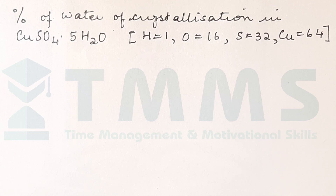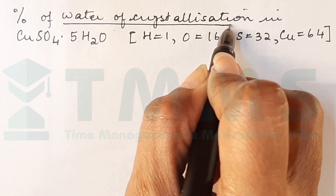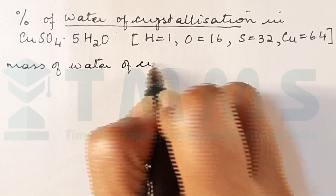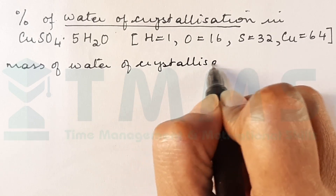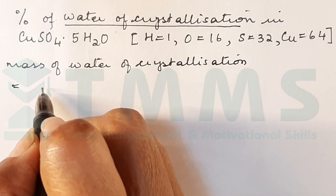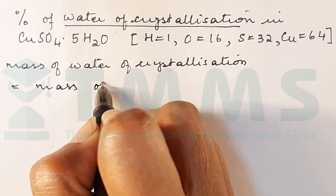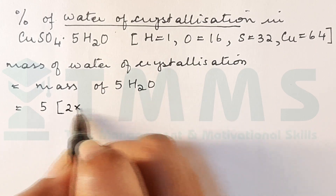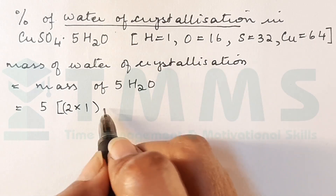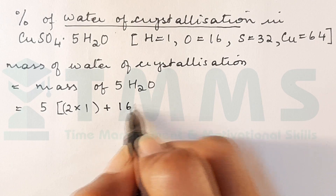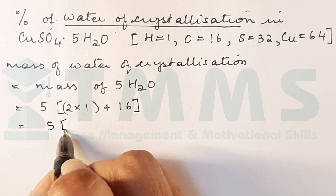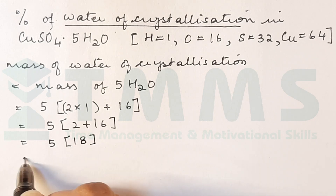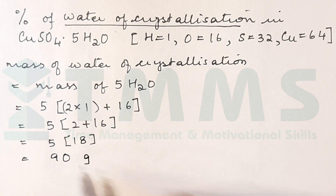Tip 2: find the mass of water of crystallization, which is the mass of 5H2O. That is 5 × [(2 × 1) + 16] = 5 × 18 = 90 g.